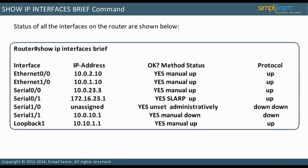In the commands on the slide, you will see the status of all the interfaces on the router. If an IP address is assigned, it will be shown. Method here is how the interface obtained an IP address. Most addresses are manual, that is, they are manually configured. If an address is assigned by DHCP, it will be indicated.